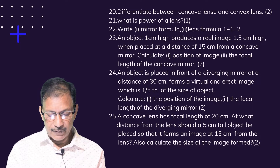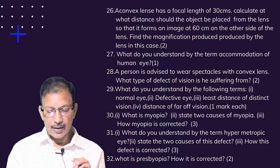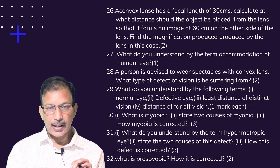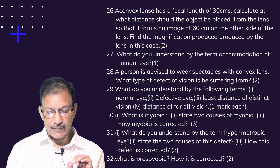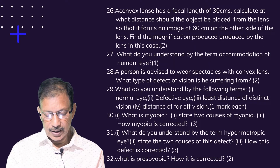A convex lens has a focal length of 30 centimeters. Calculate at what distance the object should be placed from the lens so that it forms an image at 60 centimeters on the other side of the lens. Find the magnification produced by the lens in this case.